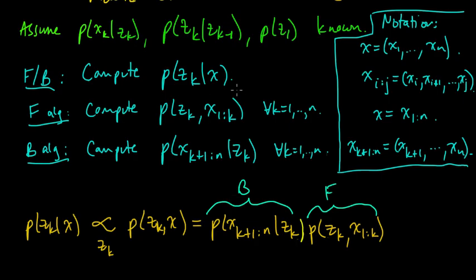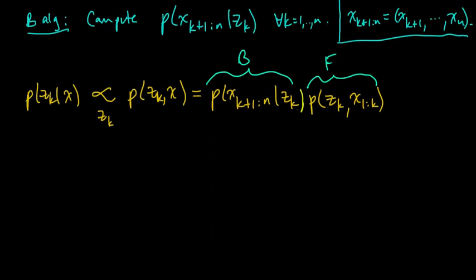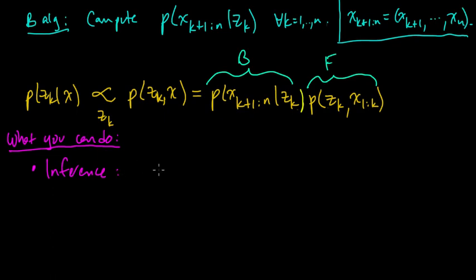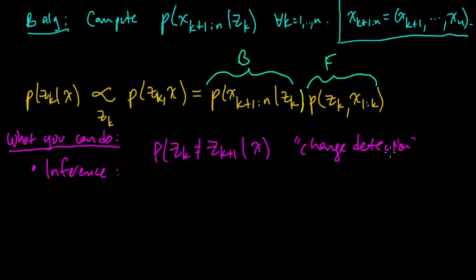Once you have these quantities in hand, you can do pretty much arbitrary inference. For example, you could compute the probability that ZK is not equal to ZK+1 for any given K — a kind of change detection. And really, pretty much anything you want to compute about the Z's given the X's, you can do.